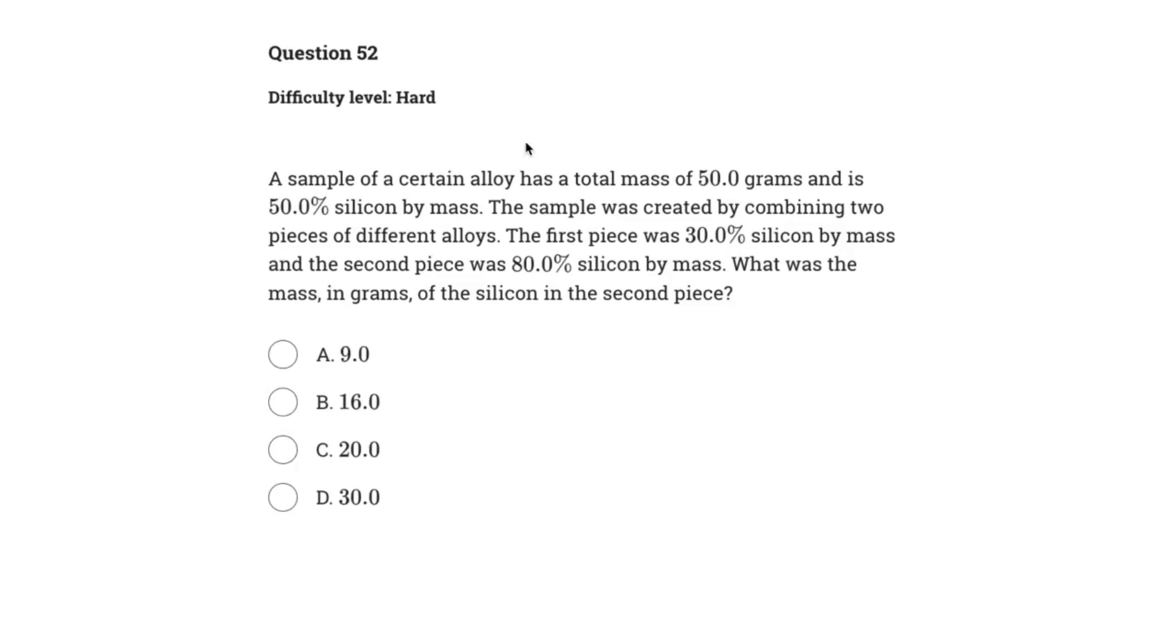So let's dive right into it. It says a sample of a certain alloy has a total mass of 50 grams and is 50% silicon by mass. The sample was created by combining two pieces of different alloys. The first piece was 30% silicon by mass and the second piece was 80% silicon by mass. What was the mass in grams of the silicon in the second piece?